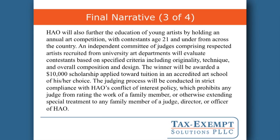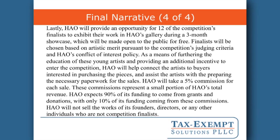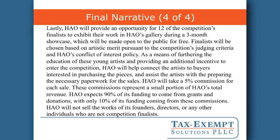The key to drafting these kinds of narratives is to show the IRS that you're aware of what the touchy issues are and you've taken steps to address them. In the final paragraph, we'll deal with the gallery sales — mentioning that the gallery sales are really based on artistic merit, that the organization is not trying to focus on art that's going to result in the most sales, and this is really a means of furthering the education of the artists and providing an incentive to enter the competition. HAO will do some representation and help sell the works for a 5% commission, but we'll remind the IRS that this is a small part of the organization's overall activities and funding, and that conflicts of interest have been managed and addressed.